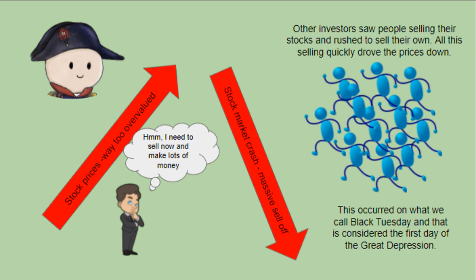However, soon some investors realized that the stocks were overvalued by a lot. They rushed out to sell their stocks, and other investors saw this and sought to sell theirs as well. Because so many people were selling their stocks, prices drastically fell. The day the stock market crashed was called Black Tuesday, and Black Tuesday is considered the first day of the Great Depression.